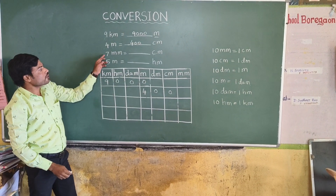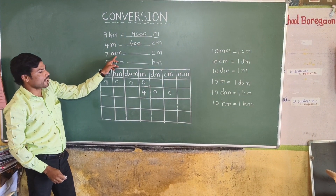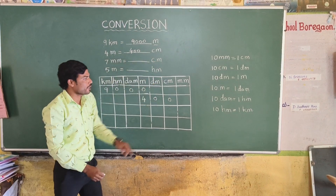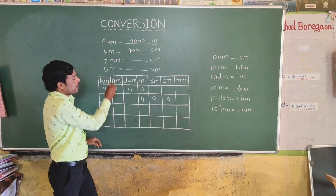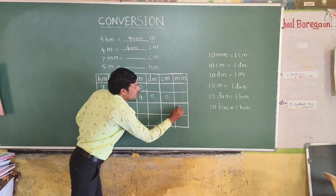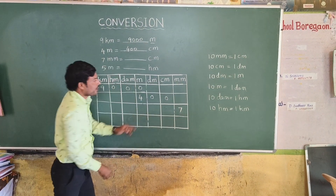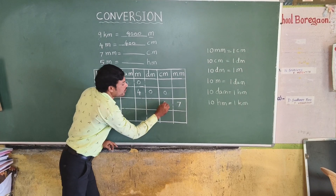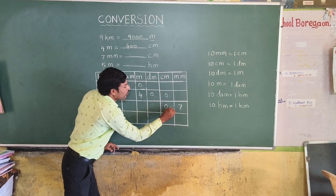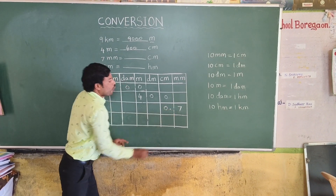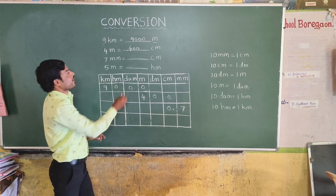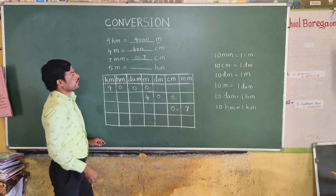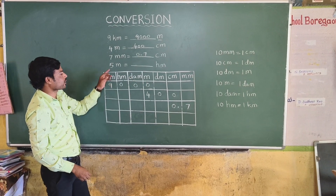Now, 7 millimeters is equal to how many centimeters? 7 millimeters... how many centimeters? 0.7 centimeters.